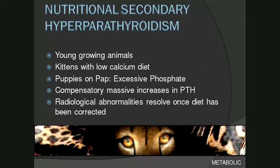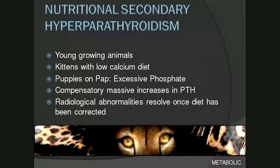The second condition is nutritional secondary hyperparathyroidism, which typically occurs in young growing animals and is very common in exotic species that are housed incorrectly. Most common causes include a kitten on a low-calcium diet or puppies being fed food containing excessive phosphate. In either case, an incorrect calcium-to-phosphate balance in the diet leads to hypocalcemia, which results in stimulation of parathyroid hormone and thus resorption of calcium from bone, resulting in osteopenia.